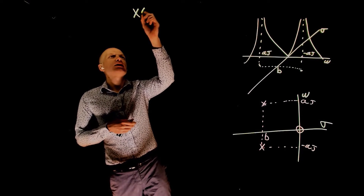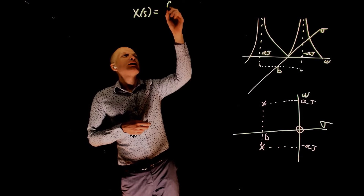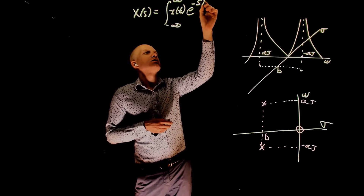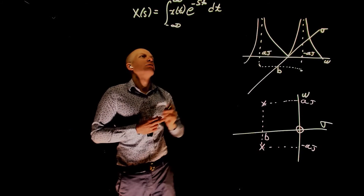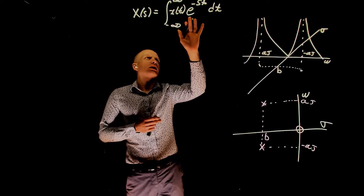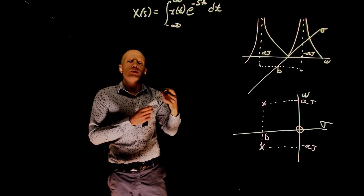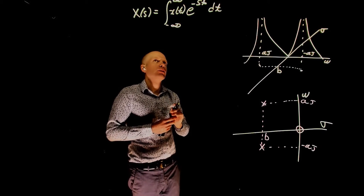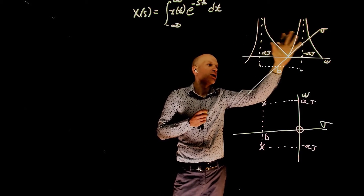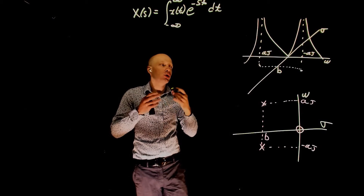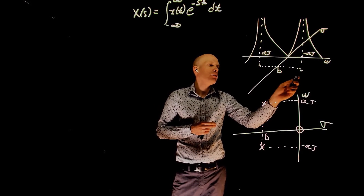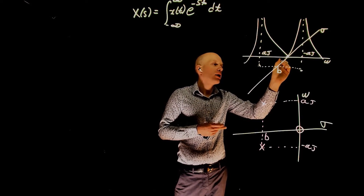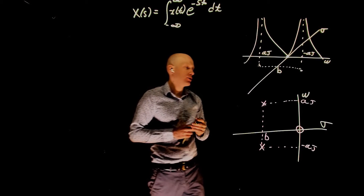Our function x of s was defined as the integral from negative infinity to infinity of x of t times exponential of negative s t dt. The exponential of negative s t is what we use to create the probing signals and compare with x of t through integration. The result of that integration gives points on the three-dimensional plane — highest at the poles and going to zero at the zero when s tends to zero.